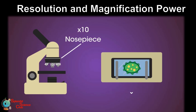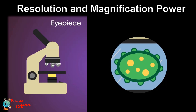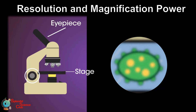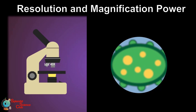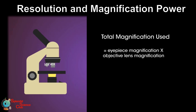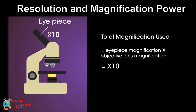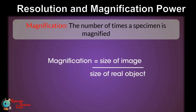Three objective lenses are attached to the nosepiece. First, light should be supplied to the specimen by a mirror or an electric bulb. In some microscopes the stage can be moved to change the distance between the objective lens and the specimen. If you use the high power objective lens, the total magnification is found by multiplying the magnification of the eyepiece by the magnification of the objective lens — that's ten multiplied by forty, giving four hundred. If you divide the size of the image by the size of the real object, you can obtain the magnification of the particular item.